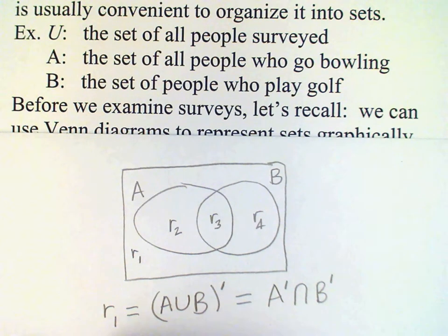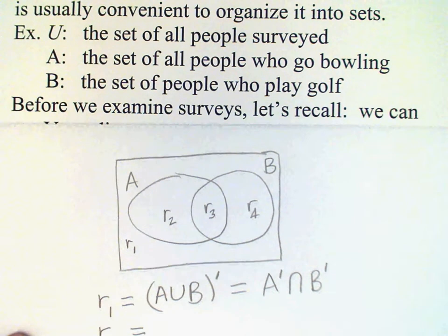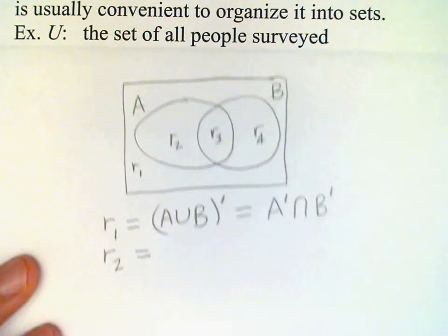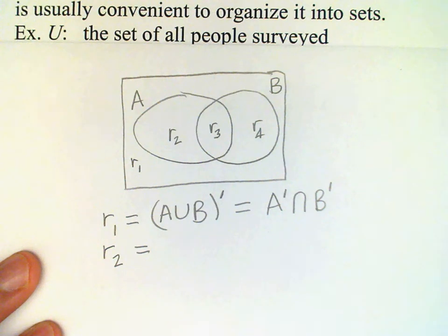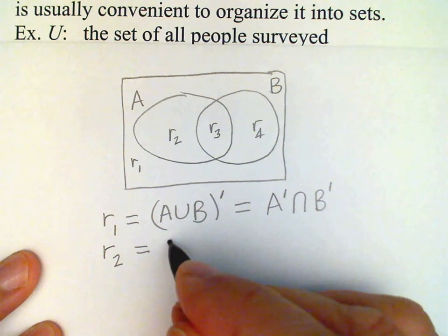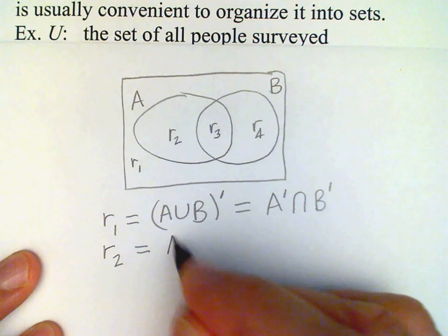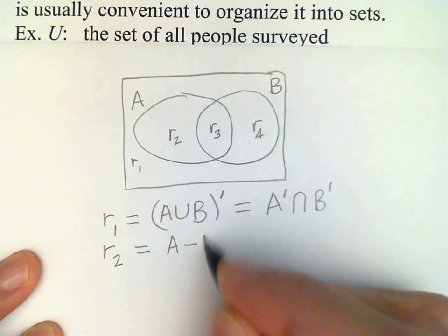Probably the most convenient way to name r2 is using a set difference. r2 is that part of A which is not in B, and that's conveniently represented using a set difference A minus B.